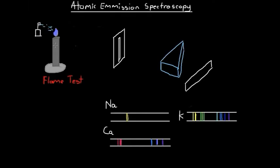We might have two different metals where one turns a dark red and one turns a slightly different red, and it can be very difficult to analyze small differences in color like that. Another weakness is that sometimes a simple flame just isn't hot enough to excite the atom that we're looking at.